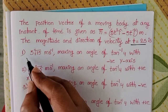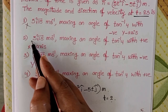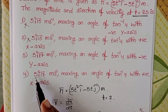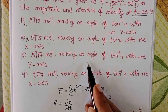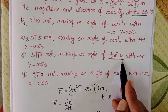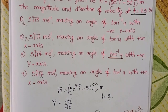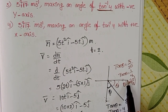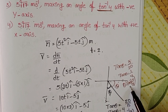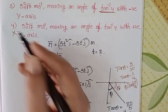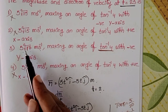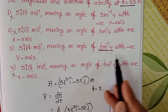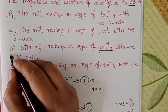Evaluating the options: the first and second options show 5 root 15, which is incorrect. The third option gives 5 root 17 meters per second making an angle of tan inverse 4 with the negative y-axis — this matches our answer. The fourth option gives 5 root 17 but with tan inverse 4 with the positive x-axis, which is not correct since the angle with the positive x-axis is tan inverse (1 by 4). So the third option is correct.